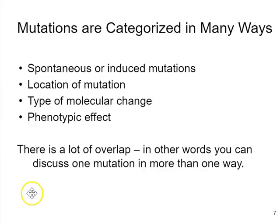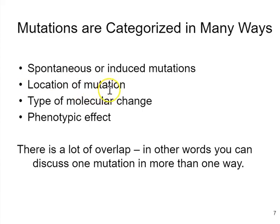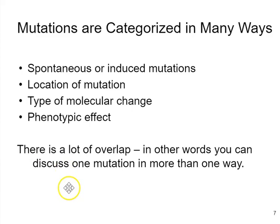Mutations can be categorized in a variety of ways. For example, they can be spontaneous — happening as a result of normally occurring cellular processes — or induced, meaning brought on by something in the environment. We can also categorize mutations according to where they happen in the genome, the type of molecular change, and the phenotypic effect. Within a single mutation event, we can describe it using all of these different considerations, so there's a lot of overlap in these ways of thinking about mutations.